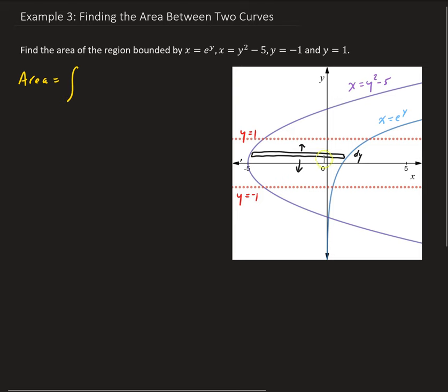Again, this is our region here. So I'm going to sketch that part here. All right, so the integral is going to go from c to d, where c is minus 1, d is 1. And we have right minus left, so it's going to be f of y minus g of y.